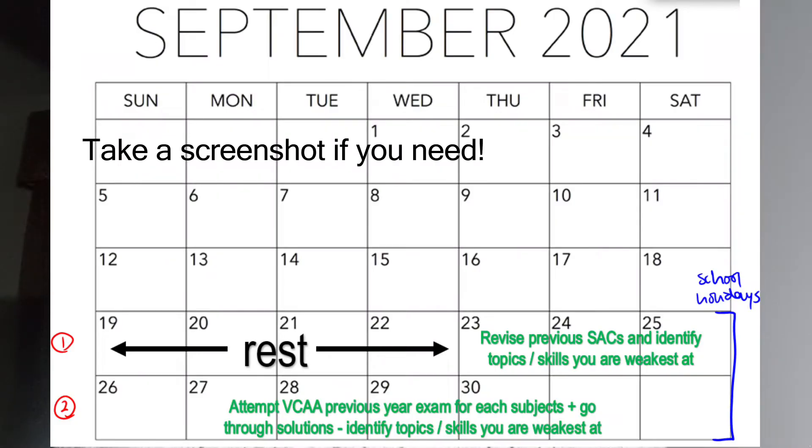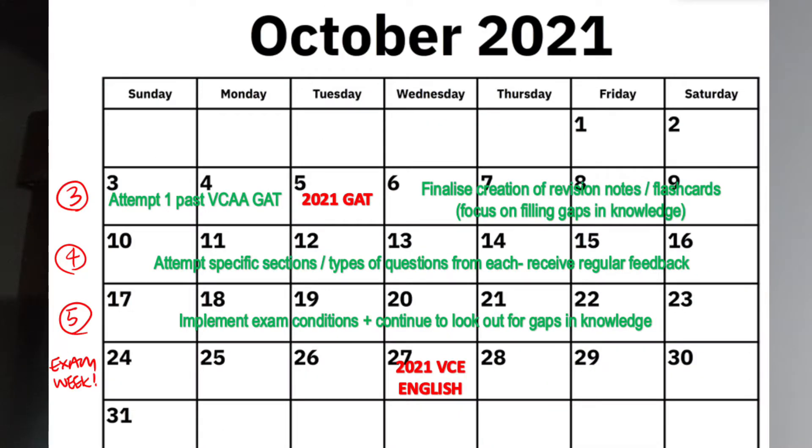I will be making references to the other VCE subjects I took so you can consider that advice and adjust it according to the subjects that you're doing this year. I've created a five-step process that you can take. Considering that we have around five weeks until the VCE English exam, each step will take approximately a week. However, if you are watching this video a bit closer to the exam or even further back, you can adjust the period of time those steps take according to how much time you have left.